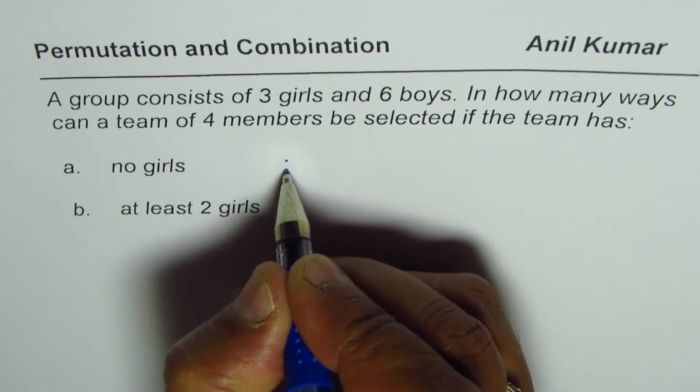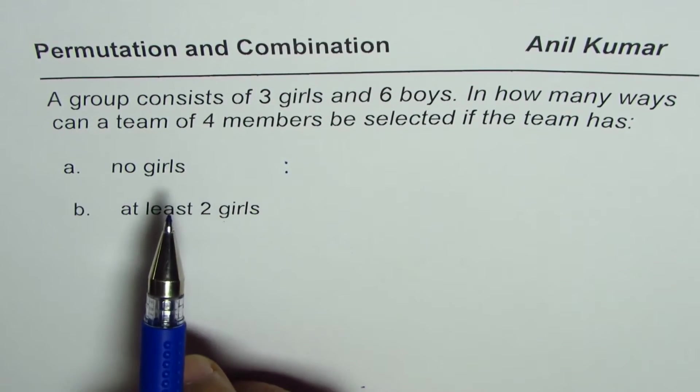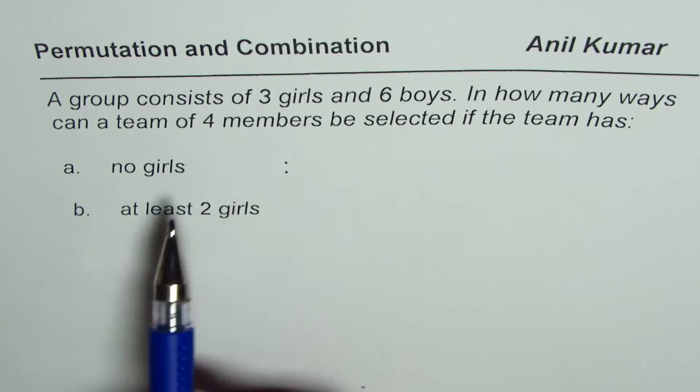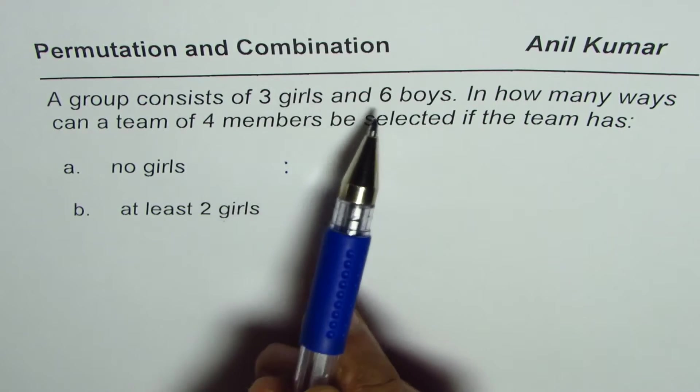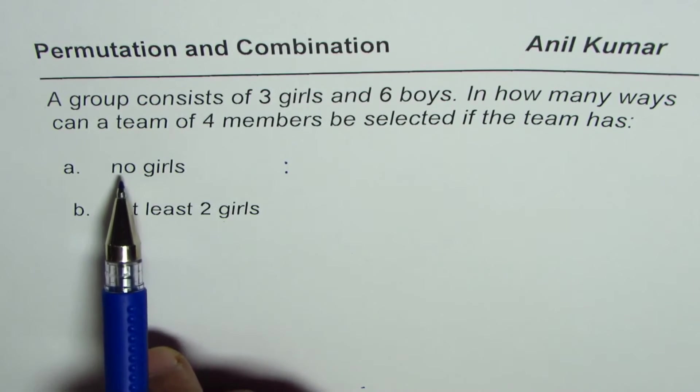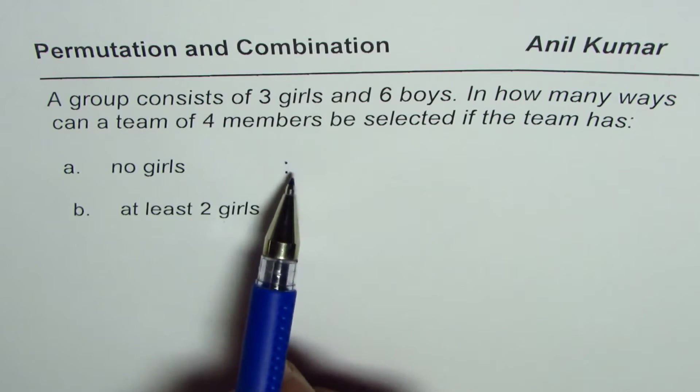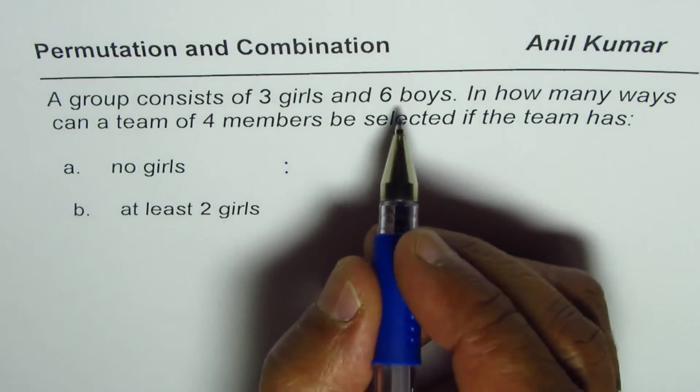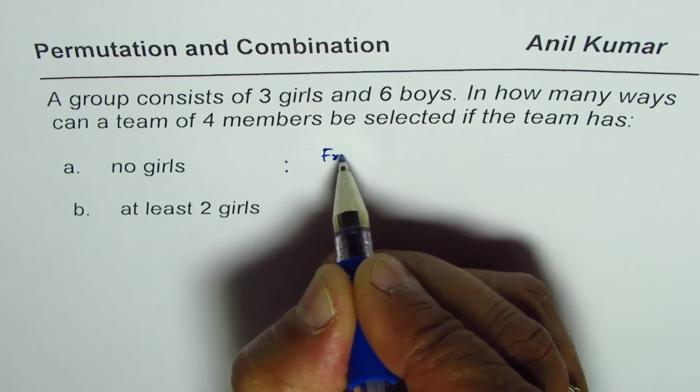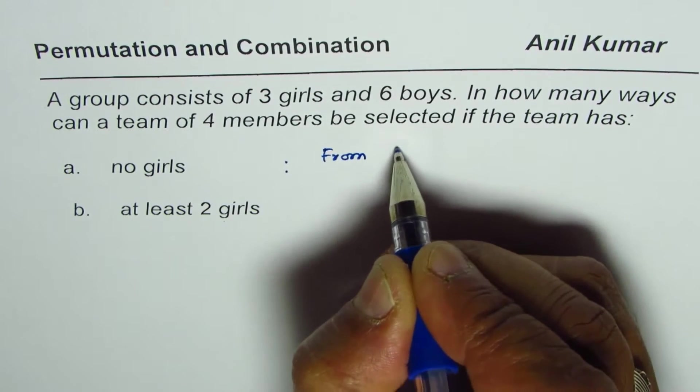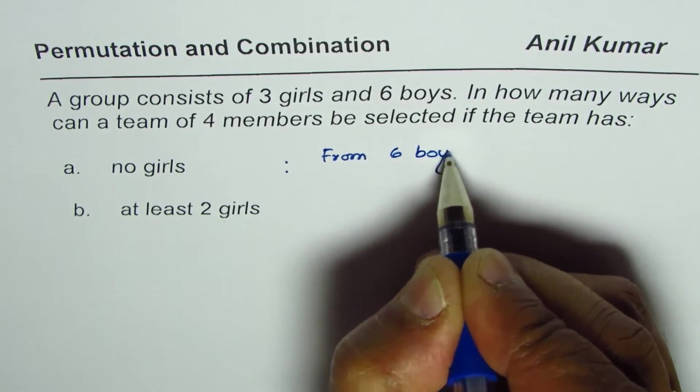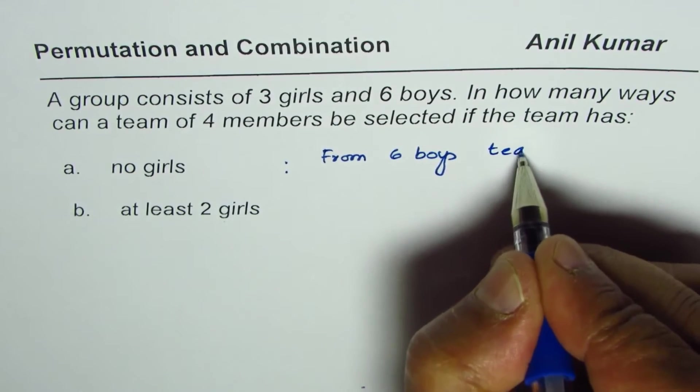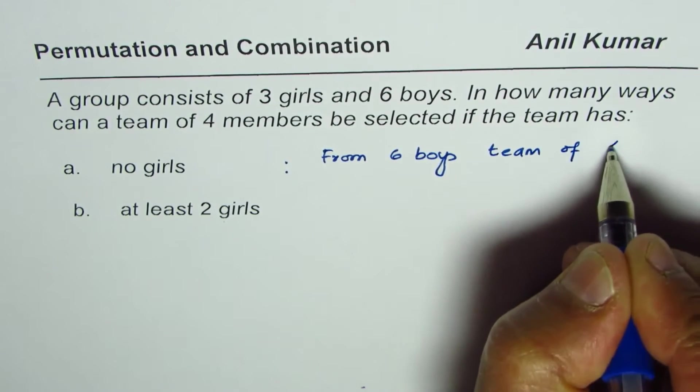So let's do the first one, which is we need to select a team with four members from three girls and six boys where there are no girls. That means we are only selecting boys. So we are selecting from six boys, team of four. That is six C four.